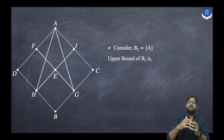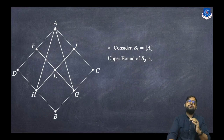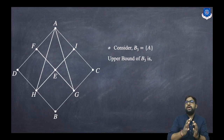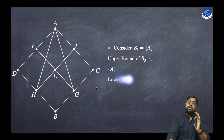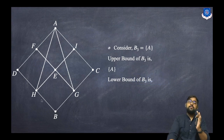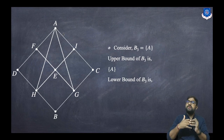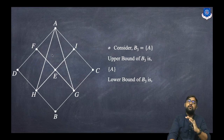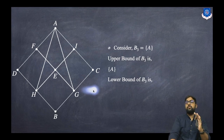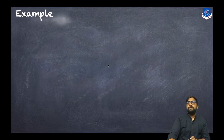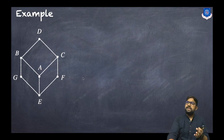Now consider B3 = {A}. For the upper bound of this single-element set, there are no upper points above A in the diagram, so A itself is the upper bound. For lower bounds, all other points in the diagram are lower points, and since we can go from each and every point to A, all points will be the lower bounds.